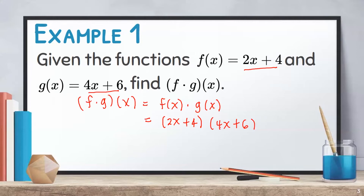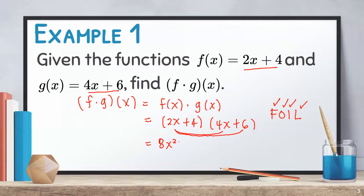In multiplying two binomials, you can use the FOIL method. Using the FOIL method, we will multiply the first terms, the outer terms, the inner terms, and the last terms. In this equation, we multiply 2x times 4x, which gives 8x squared. Outer terms: 2x times positive 6 gives positive 12x. Inner terms: positive 4 times positive 4x gives positive 16x.